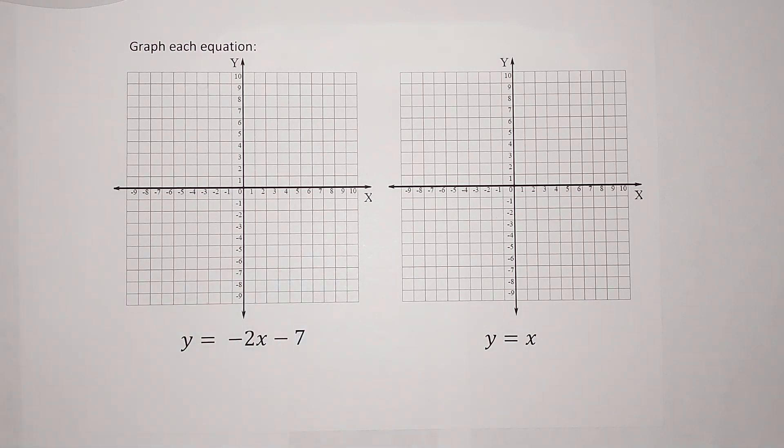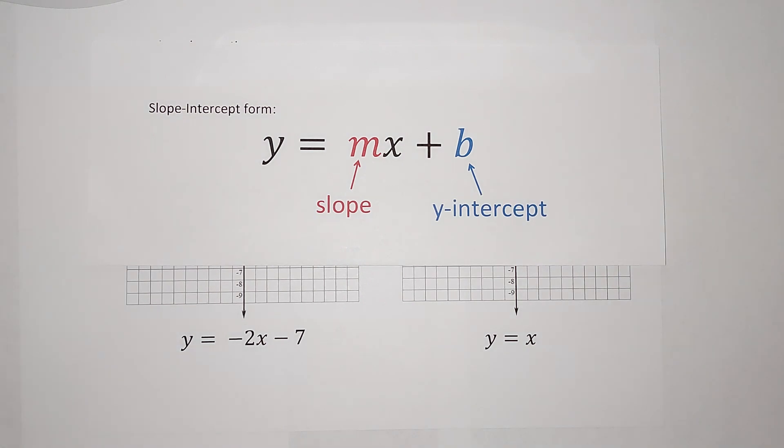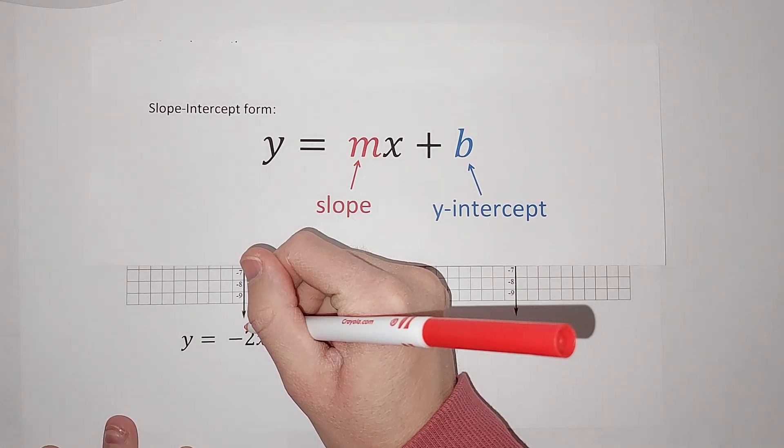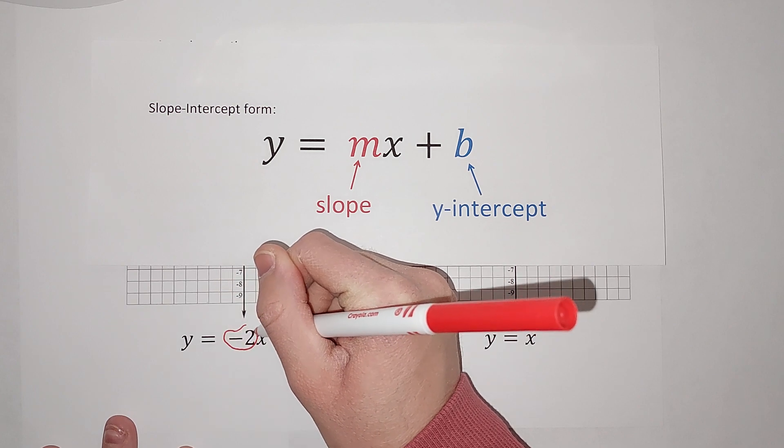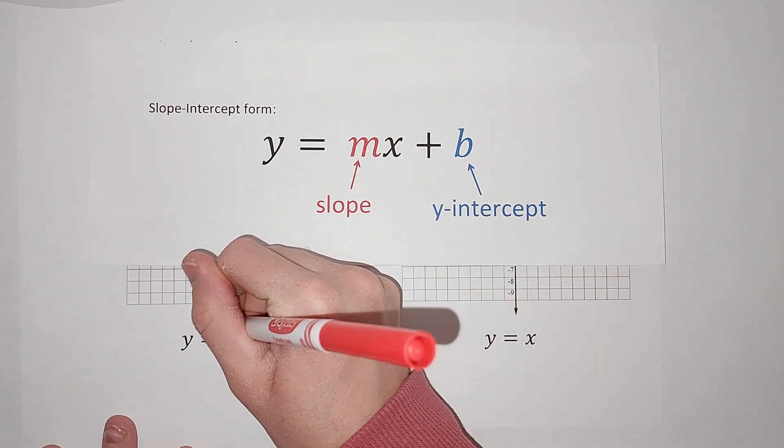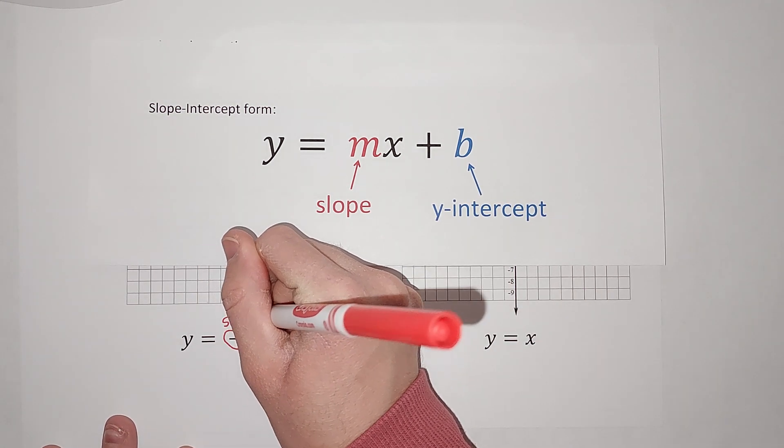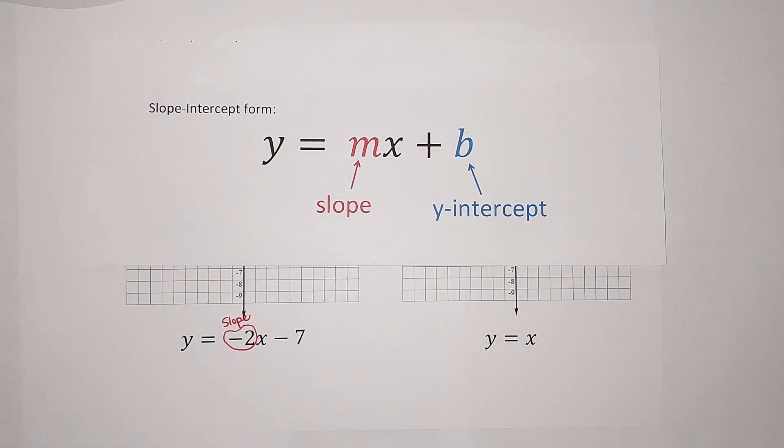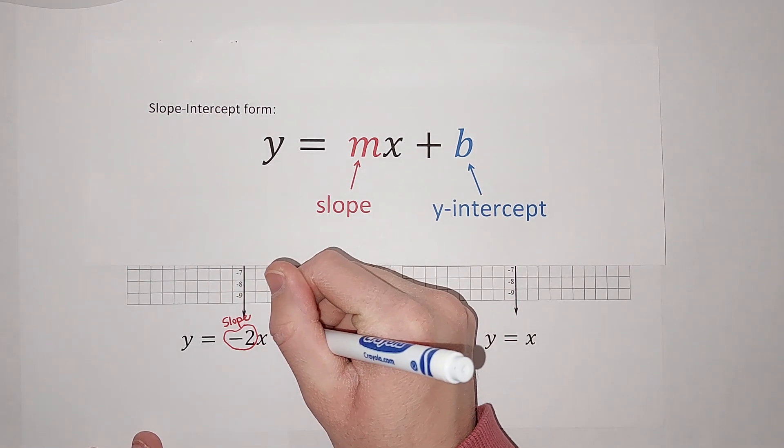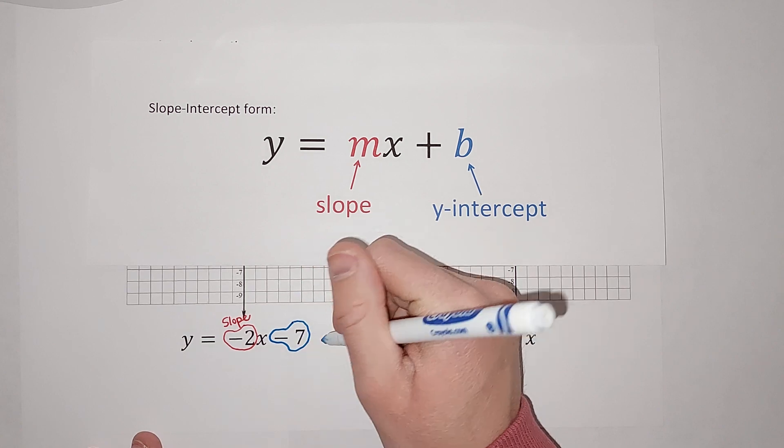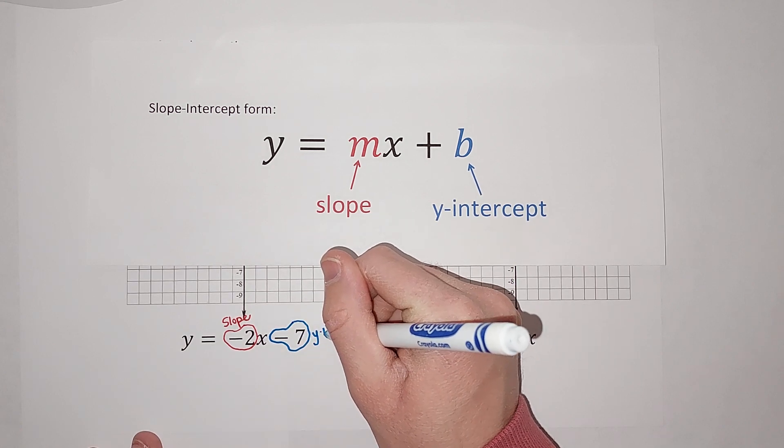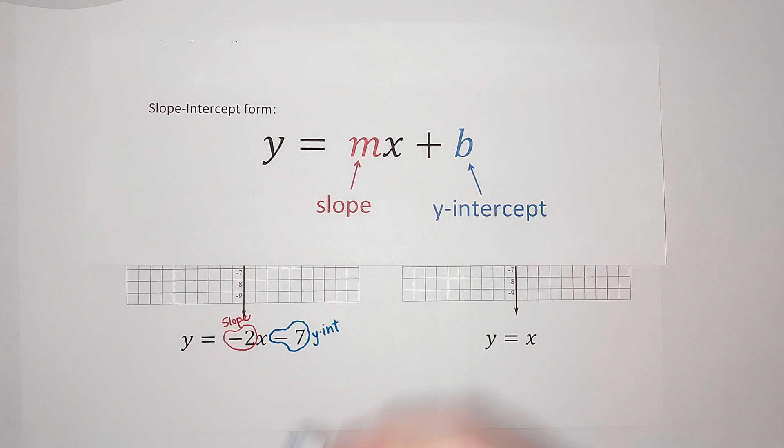Now when it is in this form, the number in front of my x is my slope. This is my slope. The number being added or subtracted on the back is my y-intercept. Now you're probably familiar with these terms, but if you're not, stick around. We're going to do it together.